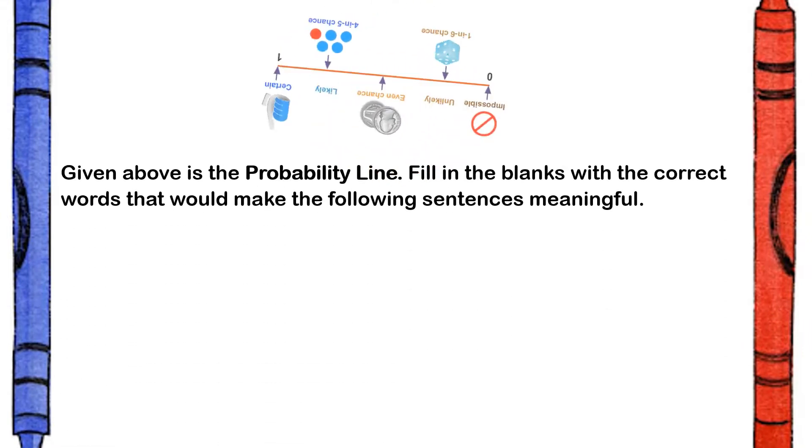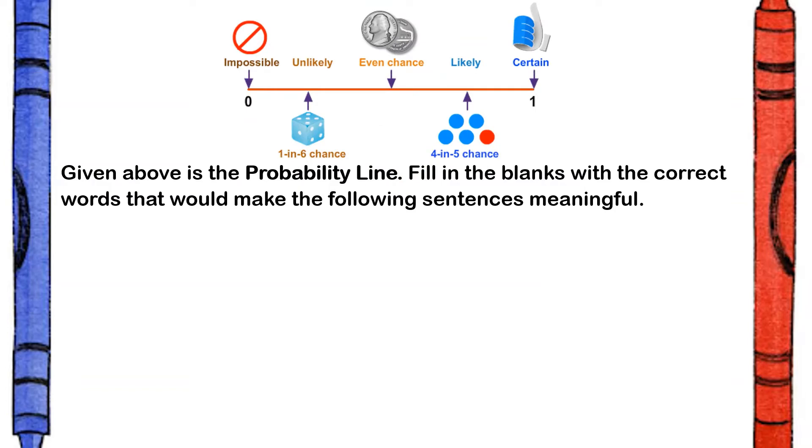Given above is the probability line. All you have to do is fill in the blanks with the correct words that would make the following sentences meaningful. Let's say, To God, nothing is blank. Of course, to God, nothing is impossible.